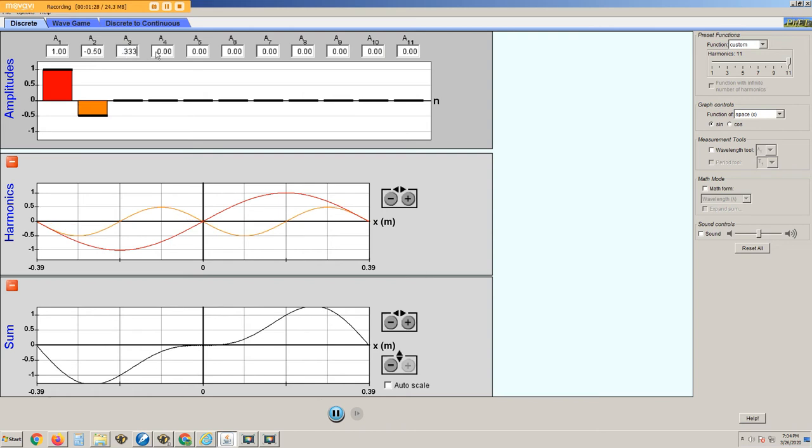The coefficient a1 is 1, a2 is minus a half, a3 is plus a third, a4 is minus a quarter, a5 is plus a fifth, a6 is minus a sixth, a7 is plus a seventh, and so on.